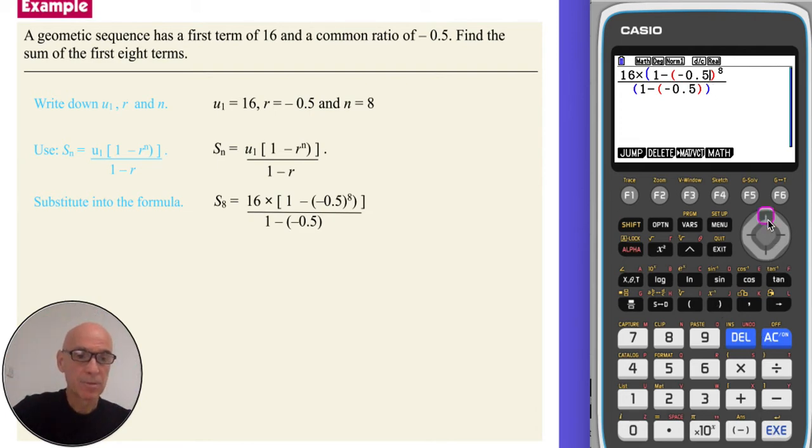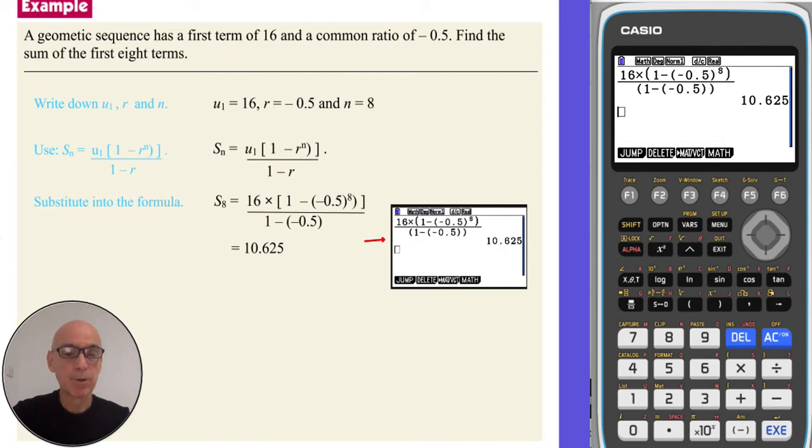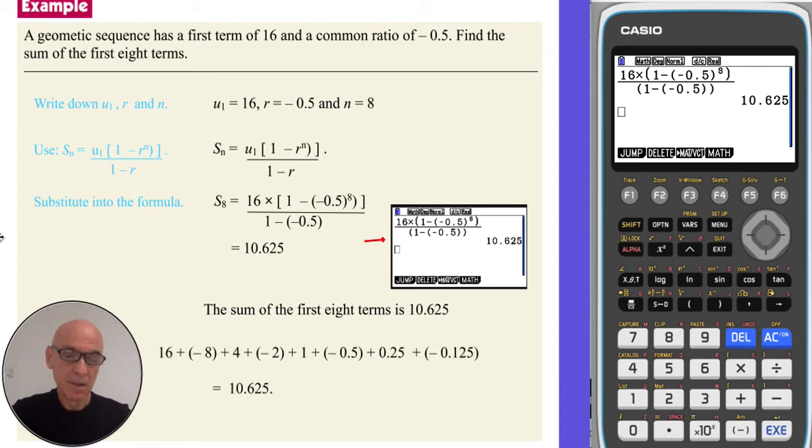Oh, I think I've got a bracket missing from the top. So we get a value of 10.625. So the sum of the first eight terms is 10.625. And since this is a fairly small number of terms, we could list the terms out to verify our answer, as shown below.